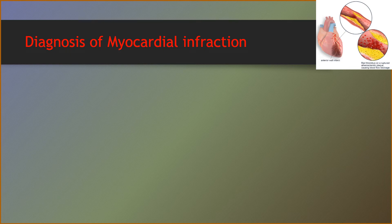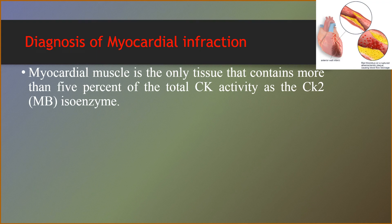Diagnosis of myocardial infarction: the figures show that when arterial walls interact, a red thrombus on a ruptured atherosclerotic plaque causes blood flow blockage. Myocardial infarction, also known as heart attack, occurs when blood flow decreases or is stopped to part of the heart, causing damage to the heart muscle. The most common symptom is chest pain or discomfort, which may travel into the shoulder, arm, back, neck, or jaw. Myocardial muscle is the only tissue that contains more than 5% of the total creatine kinase activity as the CK2-MB isoenzyme. The appearance of this hybrid isoenzyme in plasma is virtually specific for infarction of the myocardium.